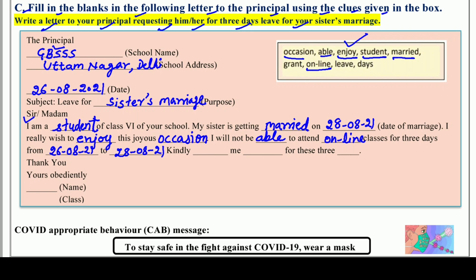उसके बाद आएगा kindly grant me leave for these three days, यानि मुझे तीन दिन की छुट्टी देने की कृपा करें. तो अब आपको समझ में आ गया कि application कैसे लिखनी है. Last में आएगा thank you, yours obediently यानि आपका आज्ञाकारी, और यहाँ पर आप अपना नाम और class section - जैसे 6A - लिख देंगे. इस तरह से यह पूरी application हो जाएगी.